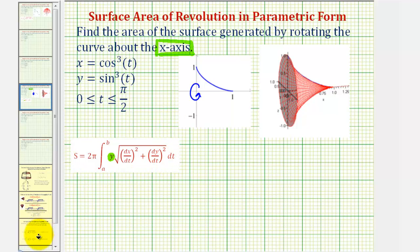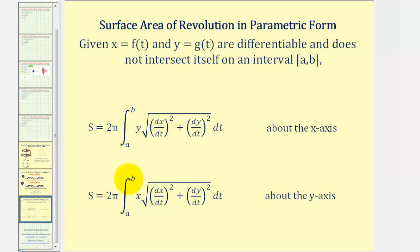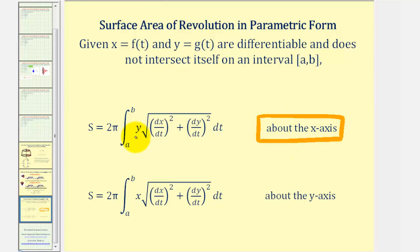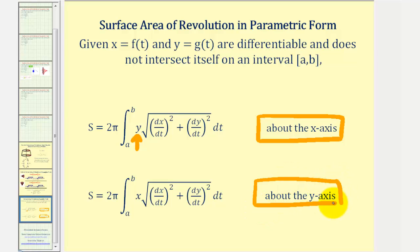For a quick review, the important thing to remember is: when finding the surface area of revolution in parametric form, if we're rotating about the x-axis, the integrand contains the variable y, where y represents the radius — in this case, the radius is a vertical distance. And when rotating about the y-axis, the integrand contains x because the radius is now a horizontal distance.